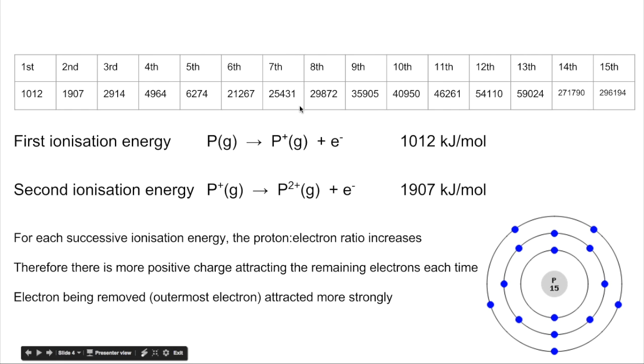So the first ionization energy, so essentially that's to remove let's say this electron here, requires 1012 kilojoules per mole.